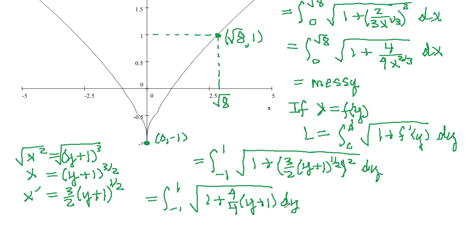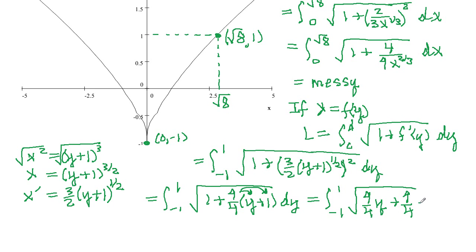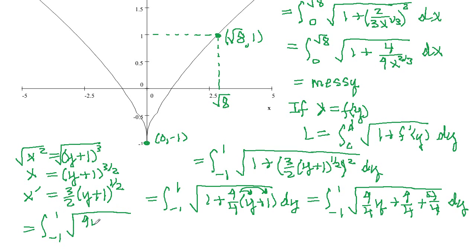That's definitely easier. If we multiply the 9/4 through and change the 1 to 4/4, we're integrating from -1 to 1 the square root of 9y/4 plus 9/4 plus 4/4, dy. All these have a common denominator, so this becomes 9y plus 9 plus 4, all over 4. That gives the integral from -1 to 1 of the square root of (9y + 13) over 4, dy.